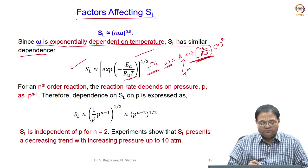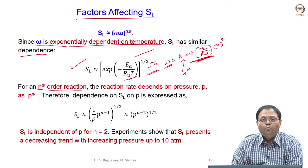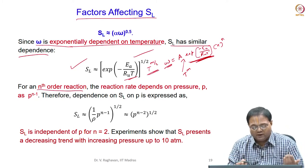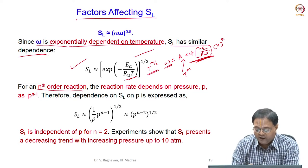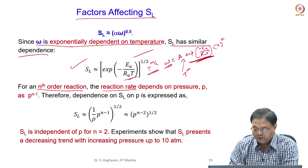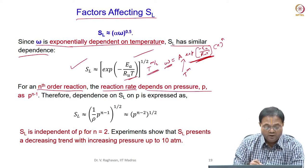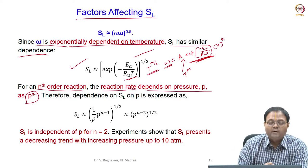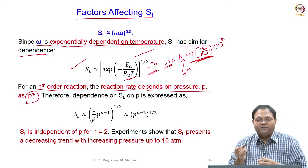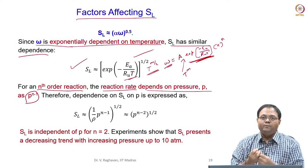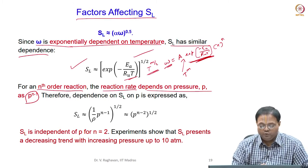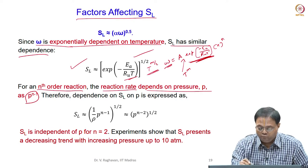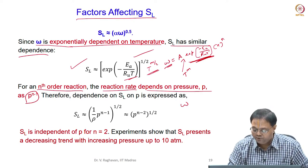Now let us consider nth-order reactions. Most reactions are second-order reactions, but let us first consider a general nth-order reaction. The reaction rate of an nth-order reaction depends upon pressure as p to the power n minus 1. So as the pressure varies, the reaction rate will vary as p^(n-1), meaning omega is a function of both p and T.